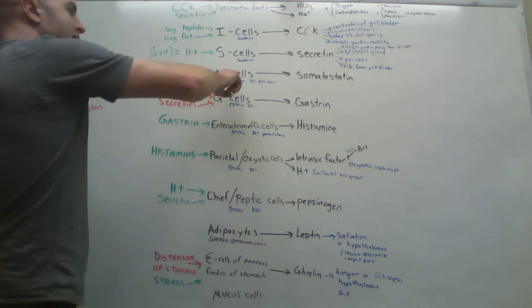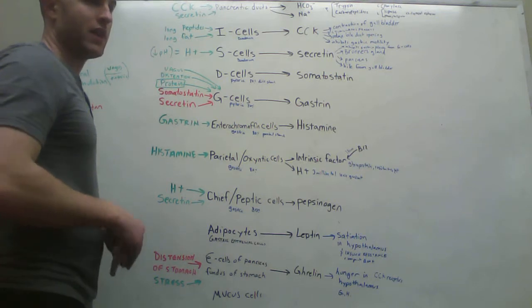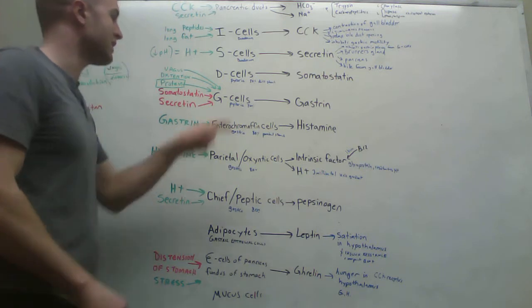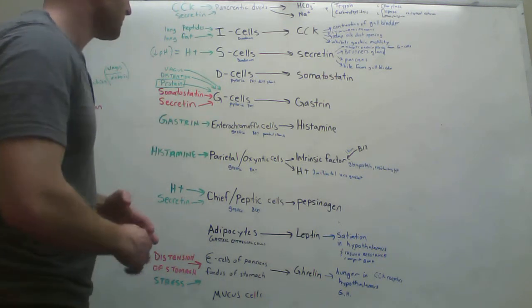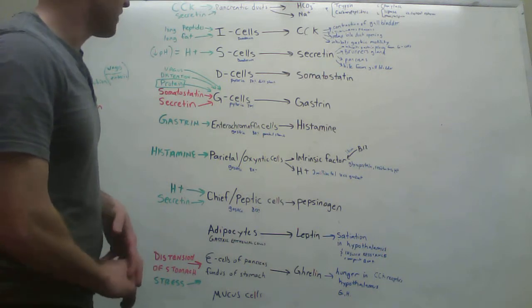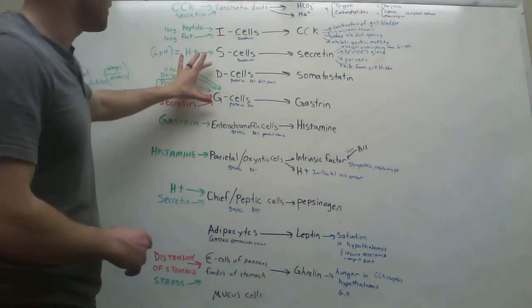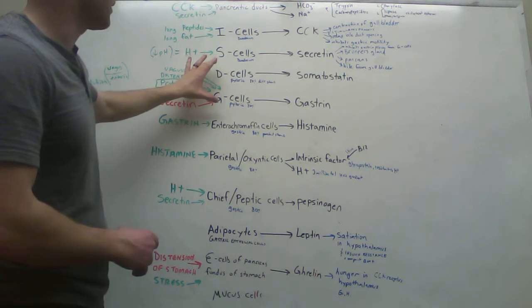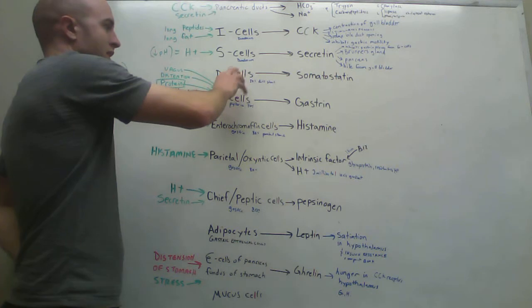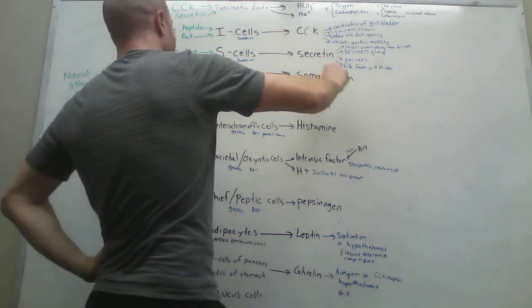So next, D cells. D cells are found in the distal 20% of the stomach in these glands called pyloric glands. So these D cells are in the pyloric glands. And maybe you could think of IS being in the duodenum, and then DG being in the pyloric. So there's also mucus cells found in the pyloric. But these are the two cells in the pyloric, the D cells and the G cells. So D cells, they release something called somatostatin.